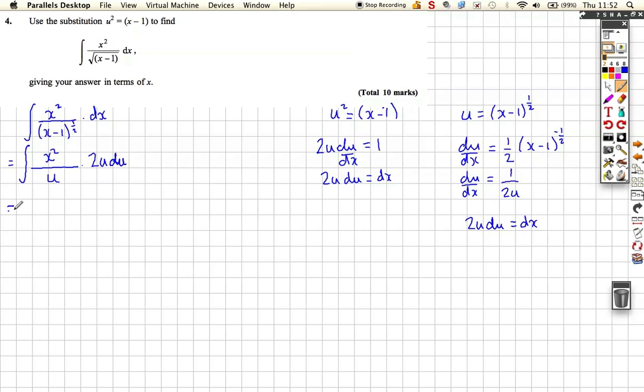So that comes out as, you can see this u cancels with this u, so we get 2x squared with respect to u, which does look a lot more simple.